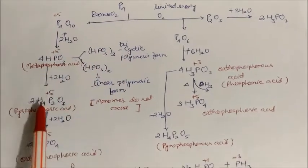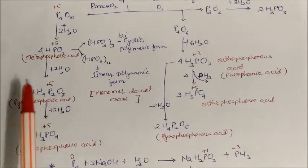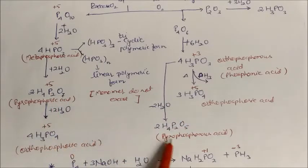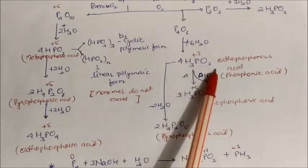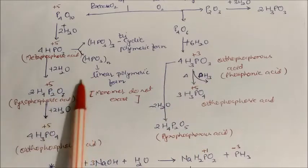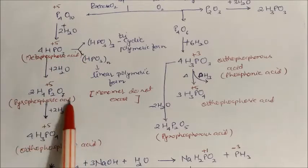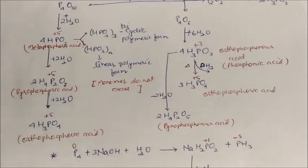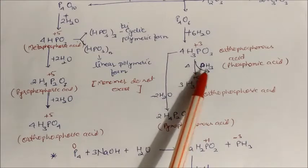From metaphosphoric acid, if you add more water, it converts into pyrophosphoric acid, which has seven oxygen atoms. The pyrophosphoric acid comes from metaphosphoric acid, and after adding water it further converts into orthophosphoric acid.